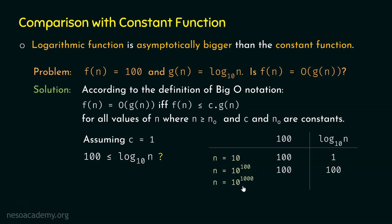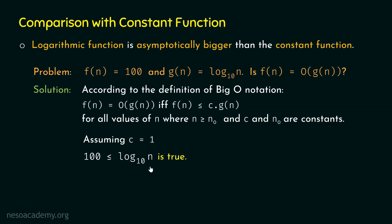For n = 10^1000: f(n) = 100 and log 10^1000 base 10 = 1000, so f(n) is less than c · g(n). For even greater values of n, f(n) remains less than c · g(n). Therefore, n₀ = 10^100, since at that point f(n) = c · g(n) and beyond it f(n) < c · g(n). Thus, 100 ≤ log n base 10 is true, and g(n) is asymptotically bigger than f(n).